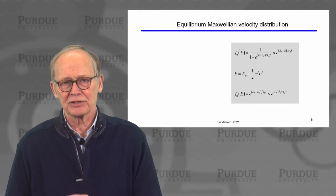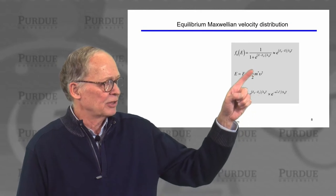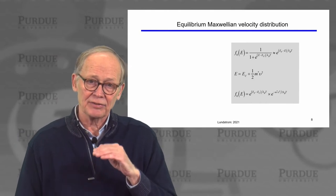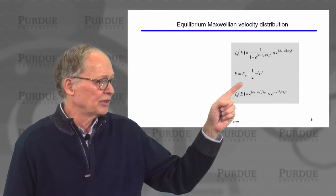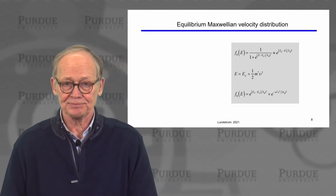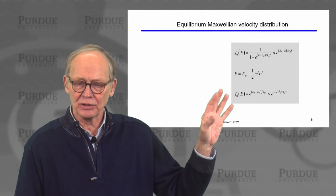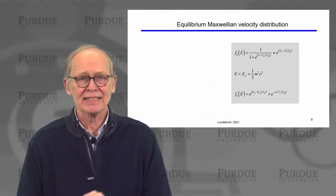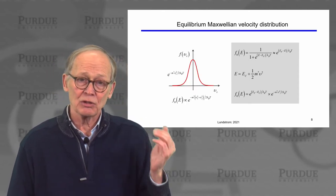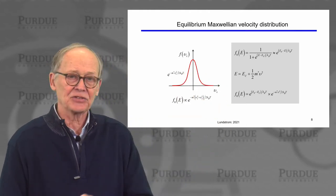The energy of an electron in the conduction band is the energy at the bottom of the conduction band plus its kinetic energy, which is one-half mv squared for a parabolic band. The result is that these electrons are distributed in velocity space in a Maxwellian distribution of velocities. If we look along one direction, the x direction, we'll see a distribution of velocities that looks like this.